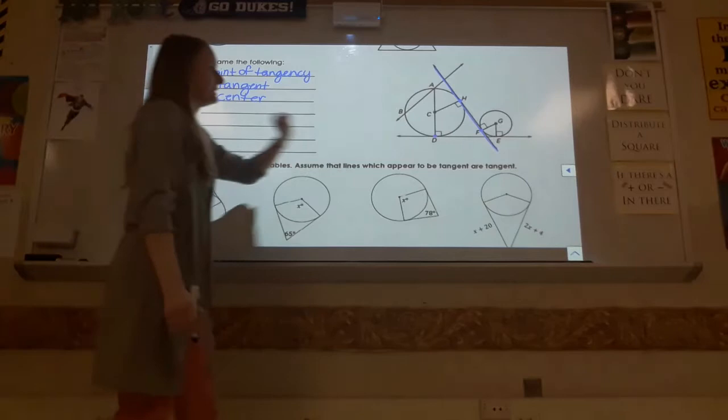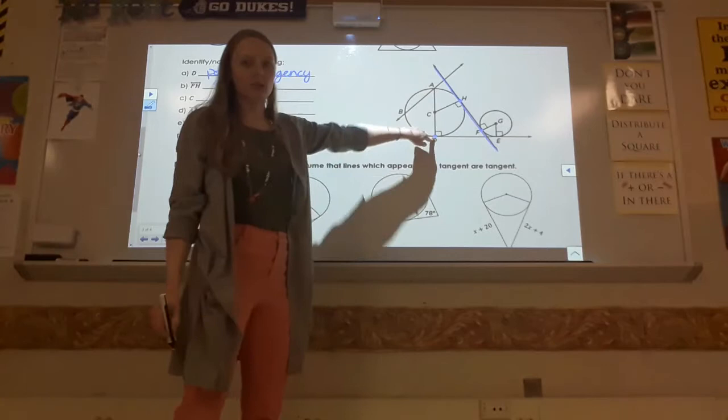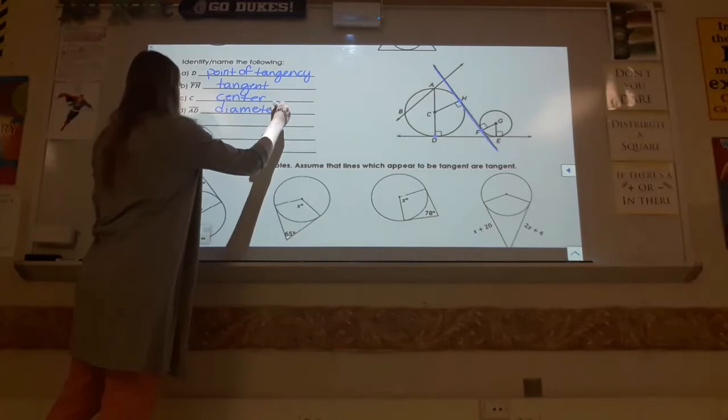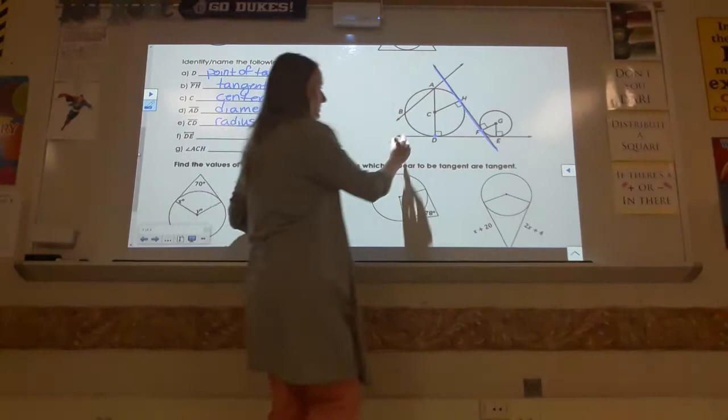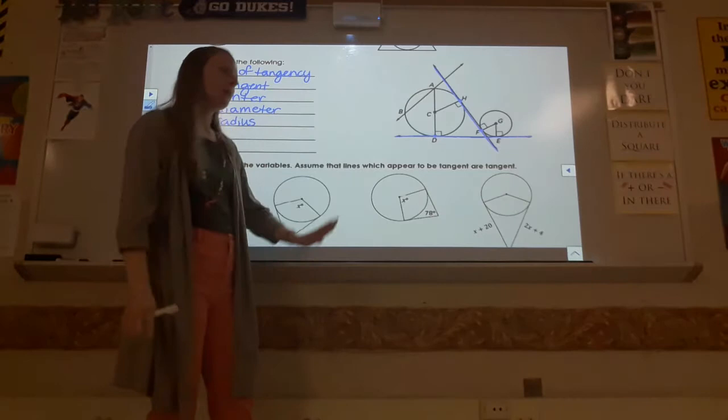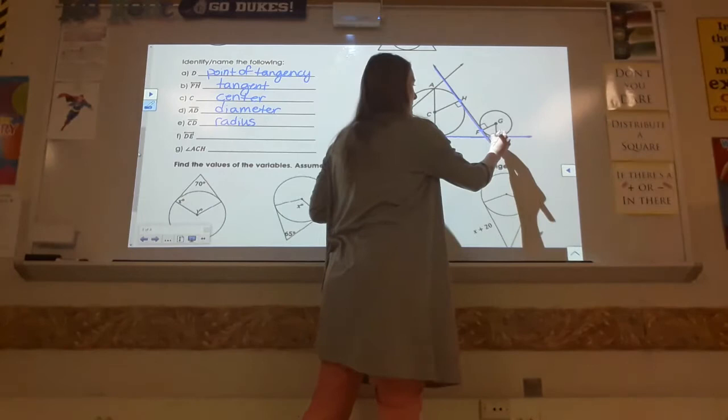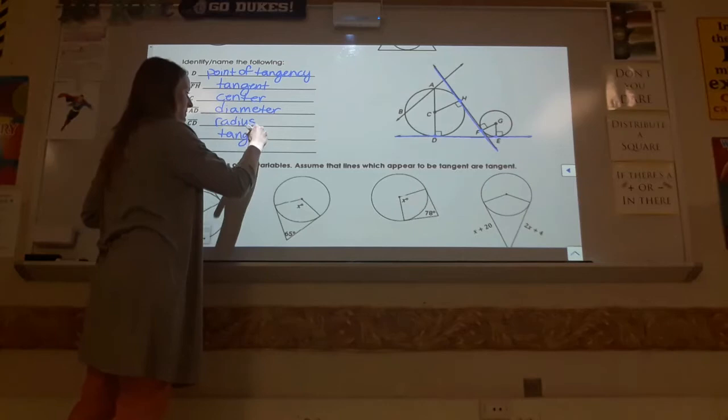Segment AD goes from one side of the circle through the center to the opposite side — that's a diameter, from day one. Segment CD is from the center to the edge of the circle, that is a radius, also from day one. Line DE — this line skims right over these two circles, crossing them at one point each. So that makes it a tangent, specific to this situation.